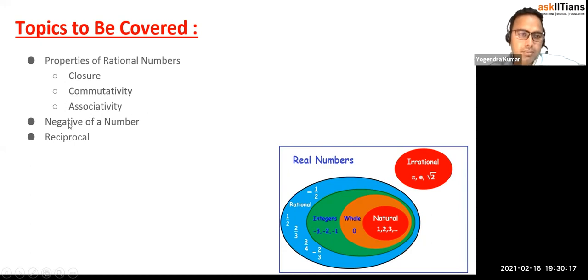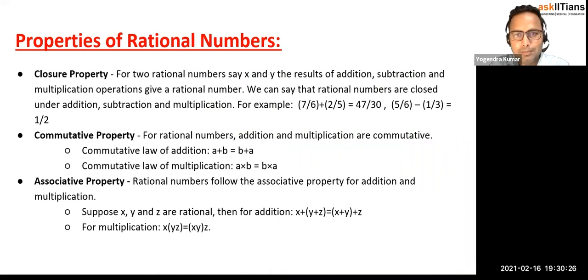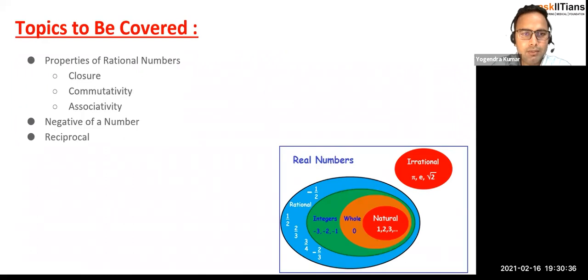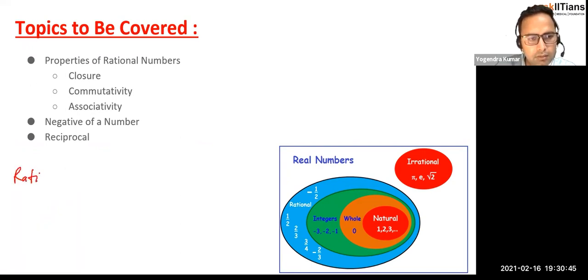These are the properties we need to learn, so let's get started. What is closure property? When we add two rational numbers — actually, I think we should first have the definition of rational numbers. It's not given here, so I'm going to add it. Let me write down the definition of rational numbers.